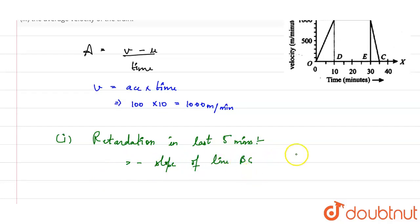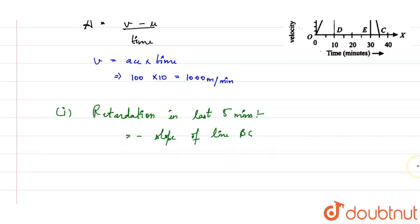And slope of line BC equals 0 minus 1000 divided by 35 minus 30 from this graph.